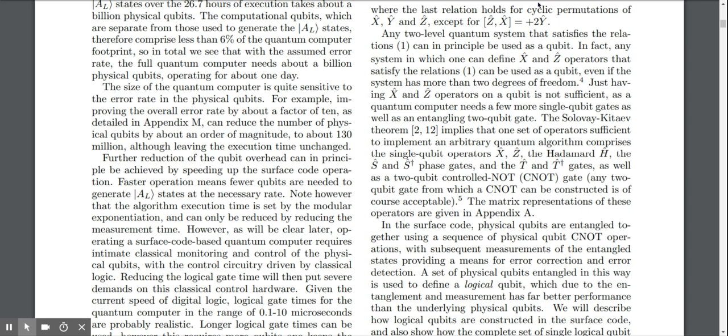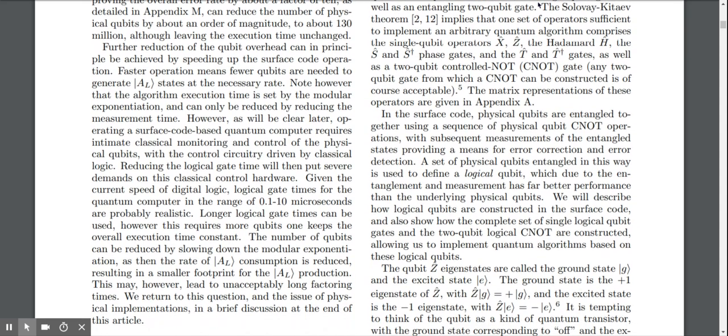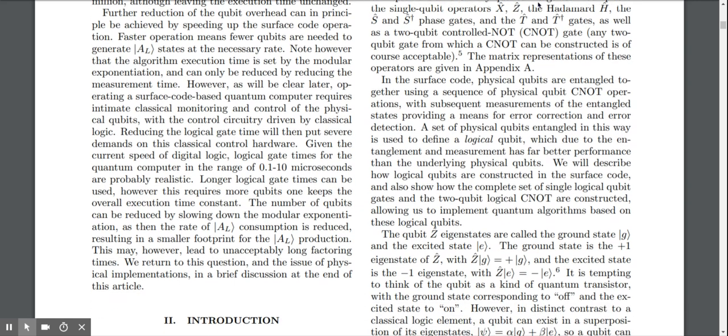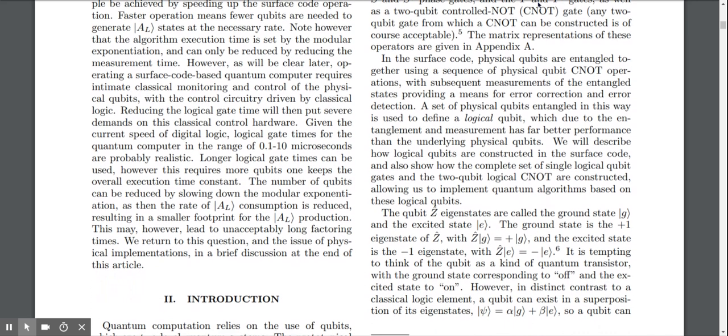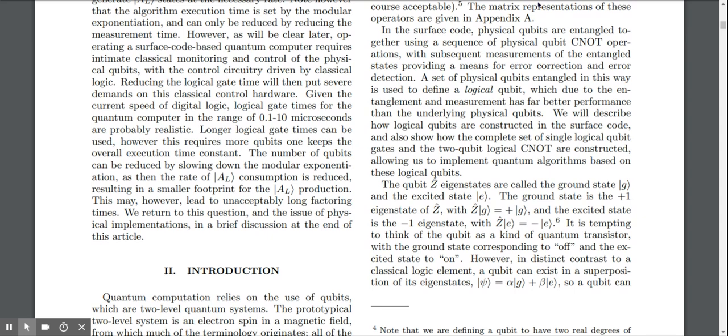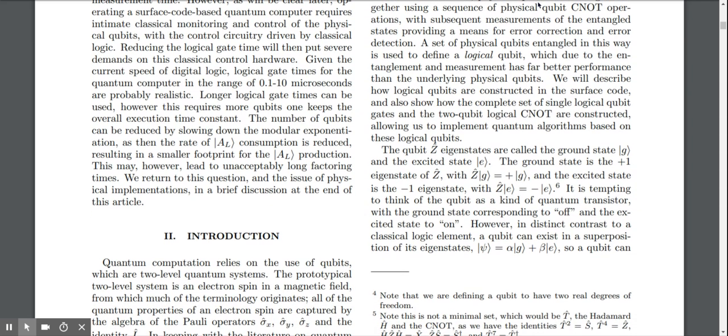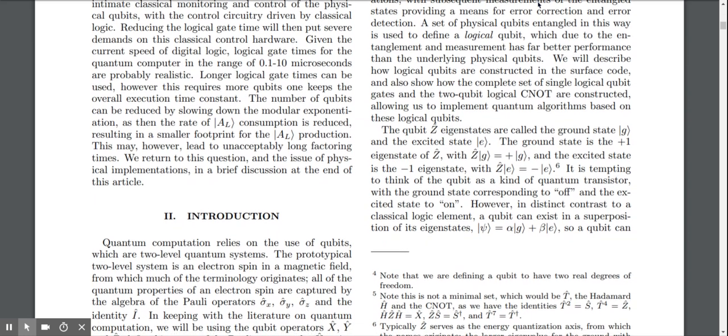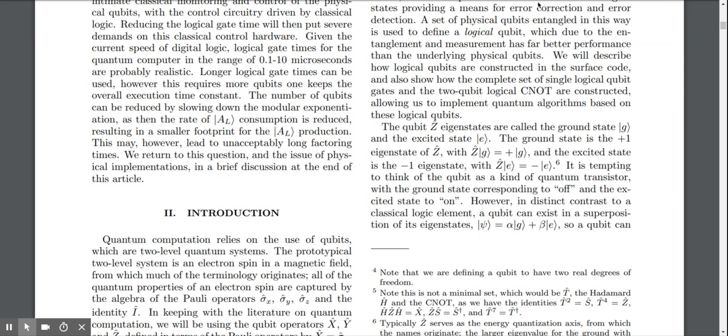In the surface code, physical qubits are entangled together using a sequence of physical qubit CNOT operations, with subsequent measurements of the entangled states providing a means for error correction and error detection. A set of physical qubits entangled in this way is used to define a logical qubit, which due to the entanglement and measurement has far better performance than the underlying physical qubits.